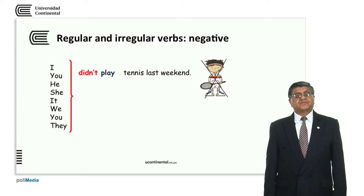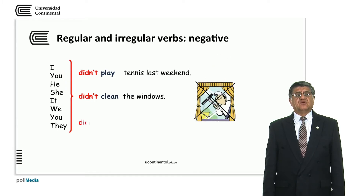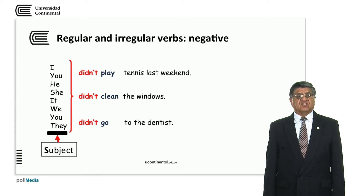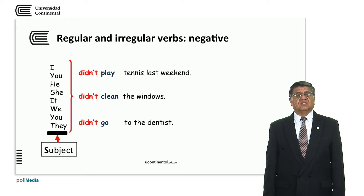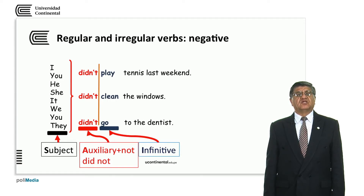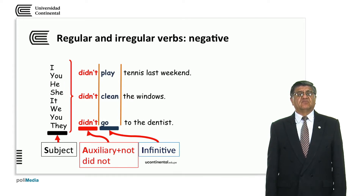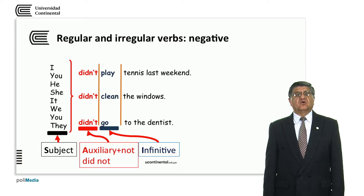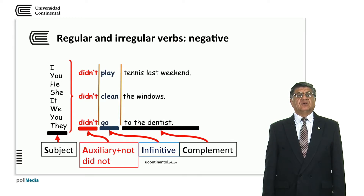The negative form uses the auxiliary 'did' plus the negative: 'didn't.' The pattern is: subject + did not / didn't + the infinitive (simple present form of the verb) + complement. For example: He didn't play tennis last week. She didn't clean the windows. We didn't go to the dentist.